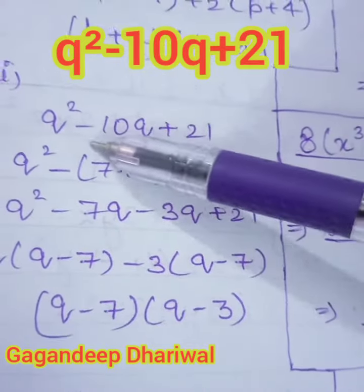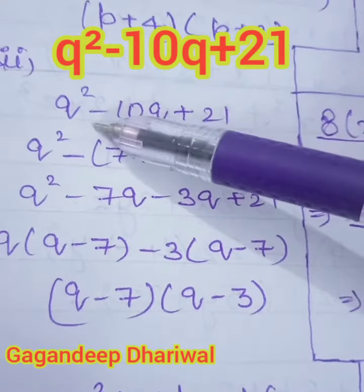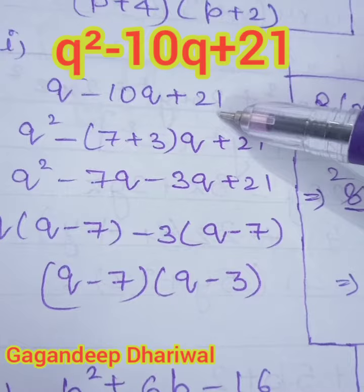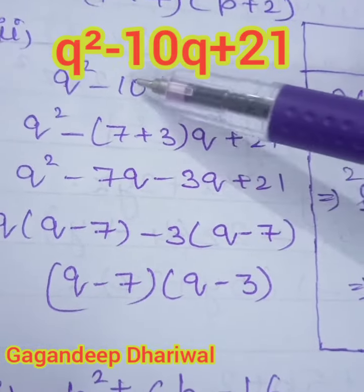Now this question q square minus 10q plus 21. The factor of 21 is 7 and 3, which is 21, and when you add 7 and 3 then 10 comes.